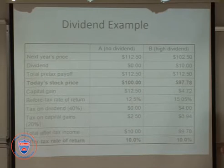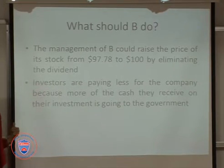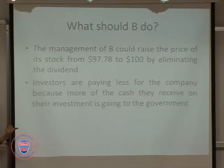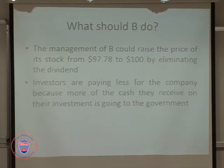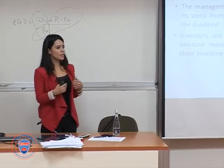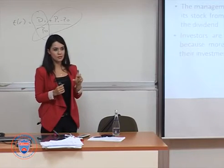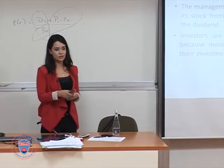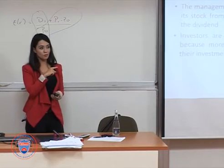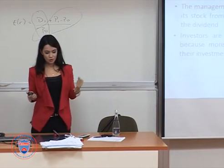Both companies give the same 10% after-tax return — this is not coincidence. Management of B could reduce dividend payments and increase the stock price from $97.78 to $100, matching company A. Because of taxes, investors are aware that some money will go to the government, which is why they price dividend-paying stocks at a lower price. This is what the dividends-are-bad camp is saying: if you can get rid of dividends, it's a good thing because the government won't collect taxes on them.